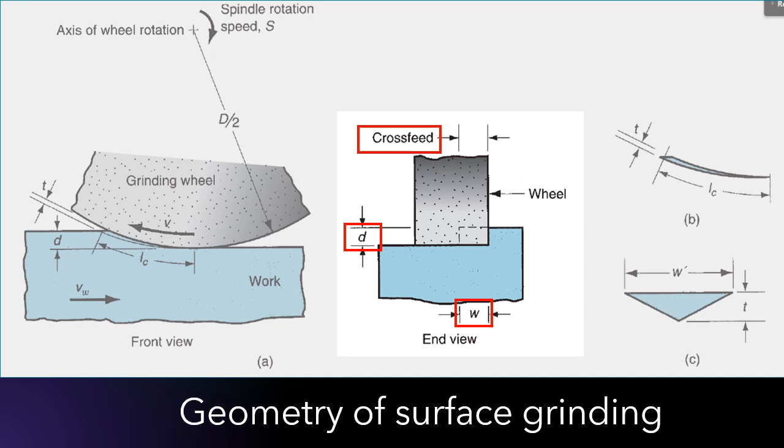The width multiplied by the depth d will determine the cross-sectional area of the cut. In most grinding operations, the work moves past the wheel at a certain work speed, and the material removal rate can be calculated accordingly.